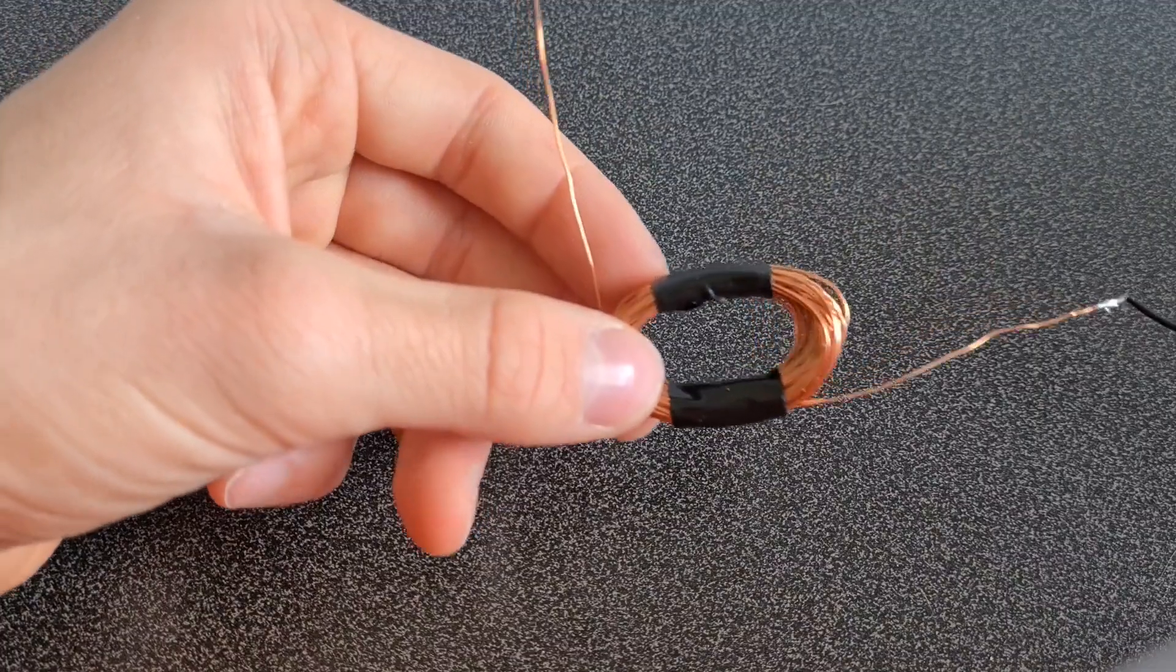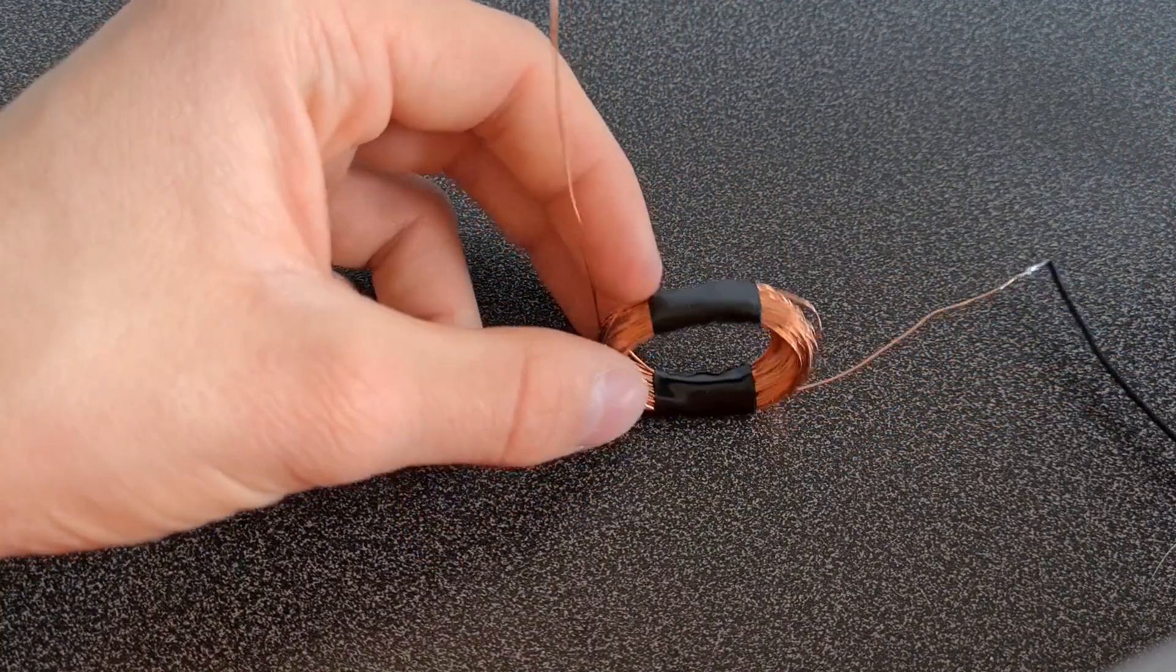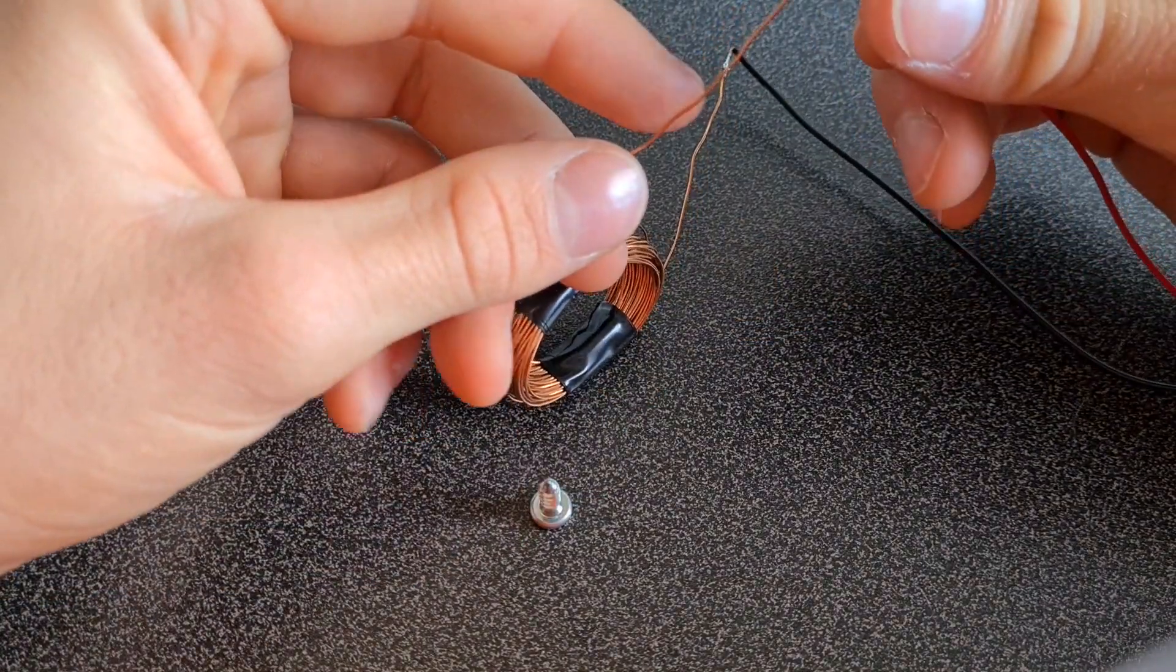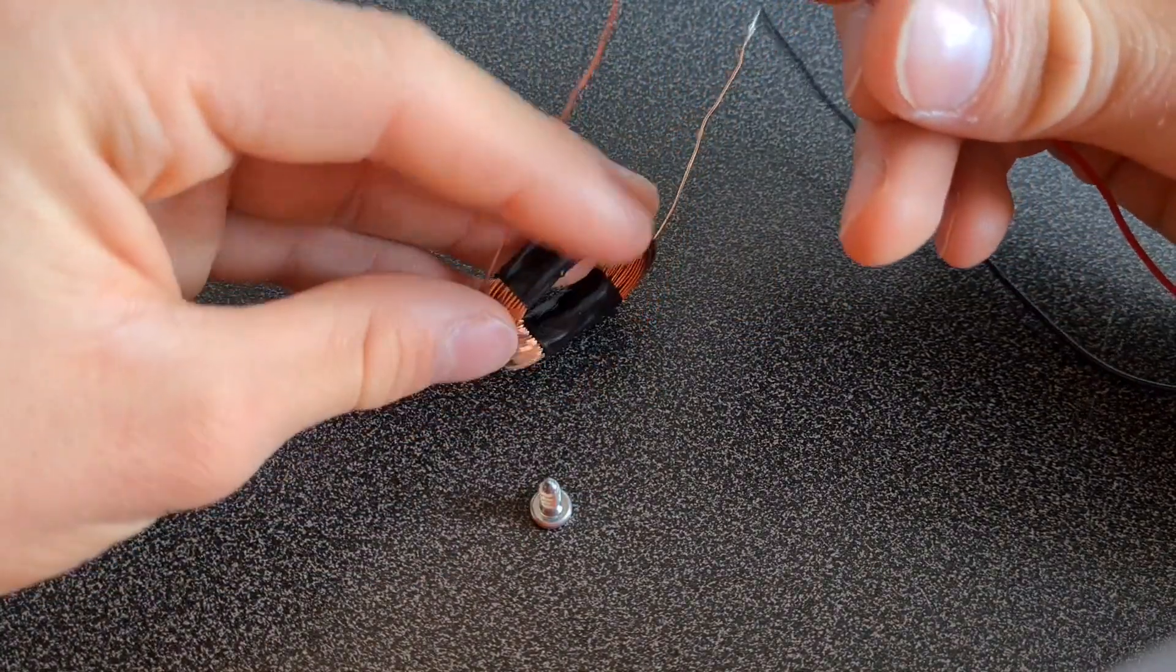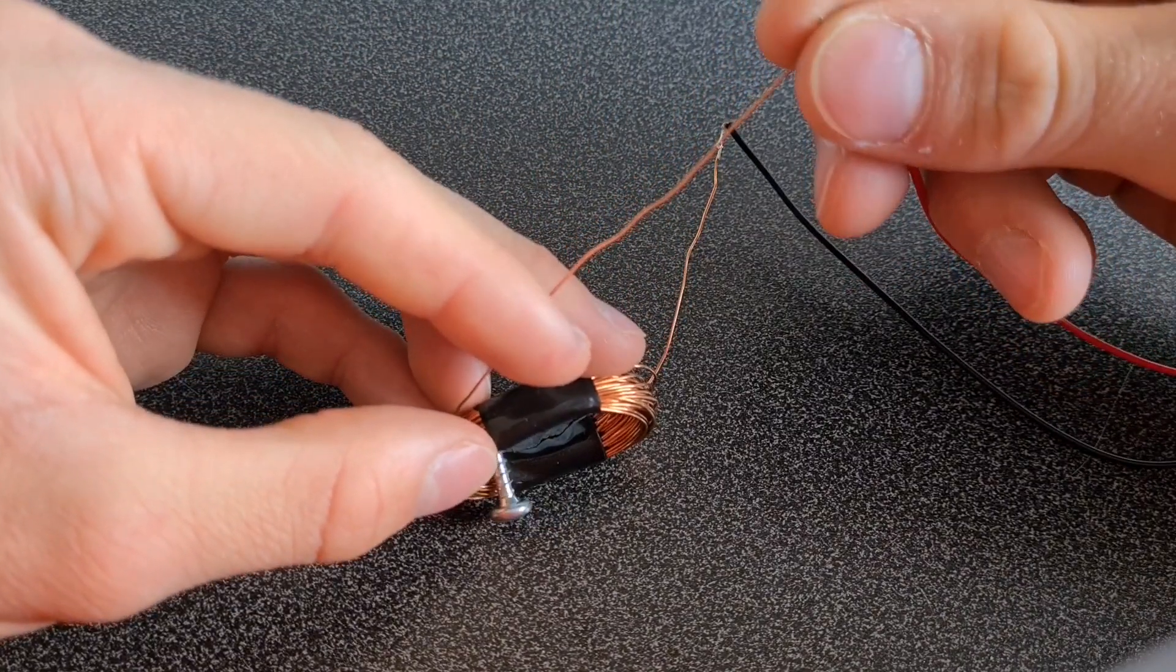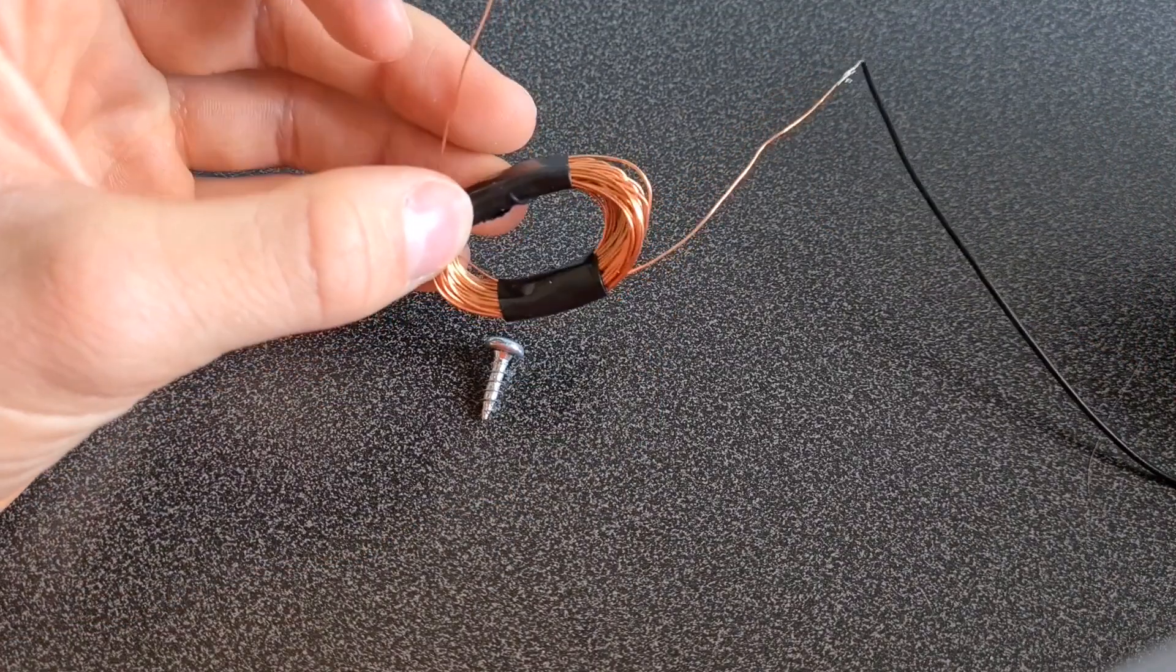Now to demonstrate this, I will put some current through this coil of wires to attract this screw. Now when I complete the circuit, the screw should be attracted to this electromagnet that we have created. As you can see, the screw was attracted to this turns of coils.